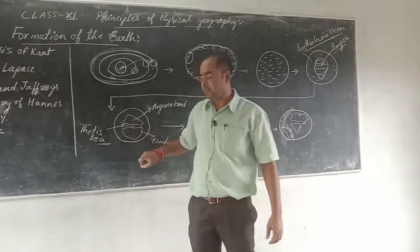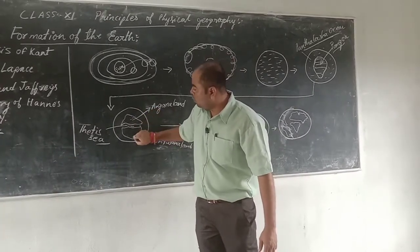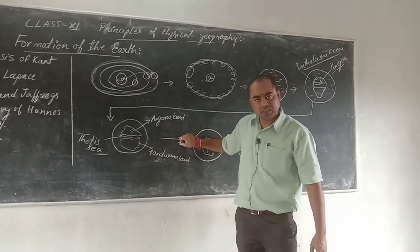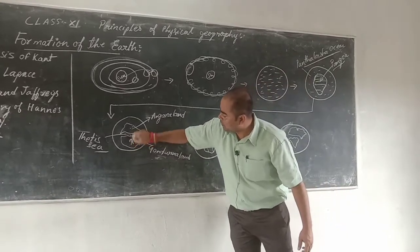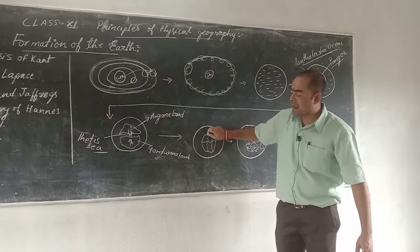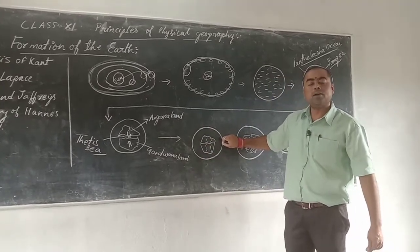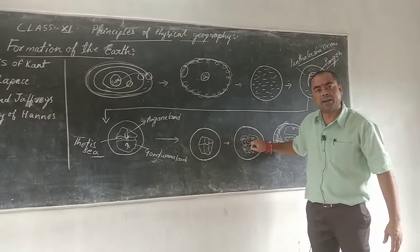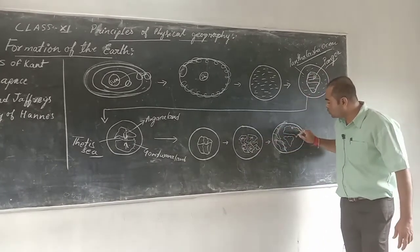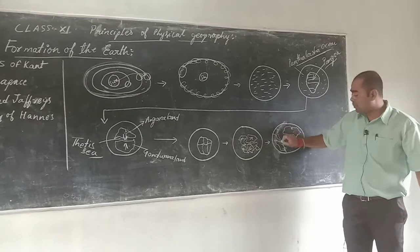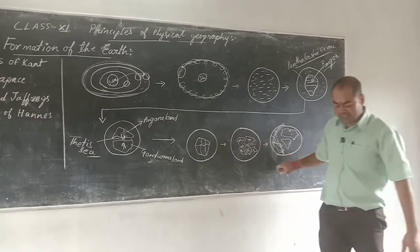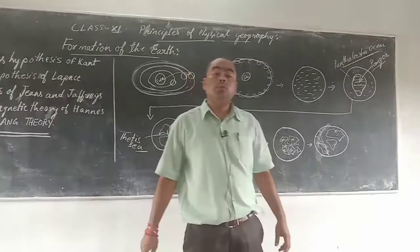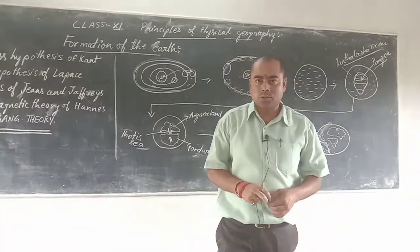These two landmasses — Angara Land and Gondwana Land — later, because of plate tectonic movement, collided with each other and developed many cracks on this huge mass. Because of plate tectonic movement again, they were separated from each other, forming different continents as we see today: Europe, Africa, North America, South America. That was the general theory related to the origin of the earth. In the next class, we will discuss the Big Bang Theory. Thank you very much, students.